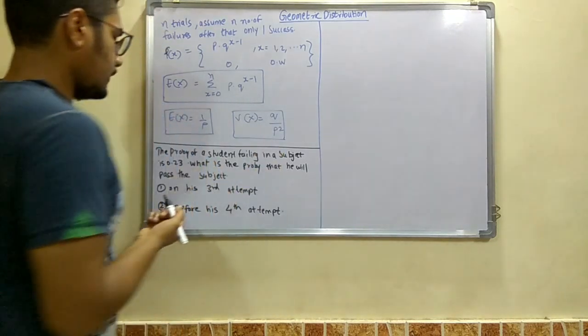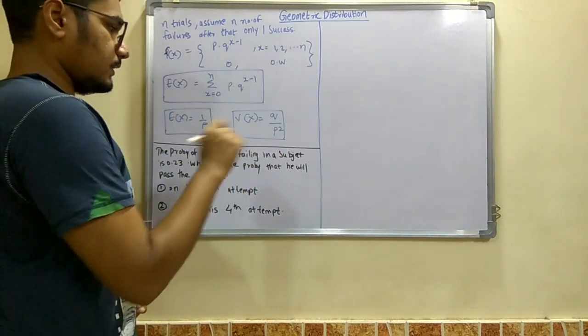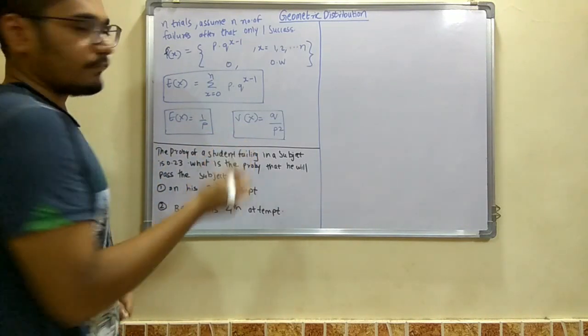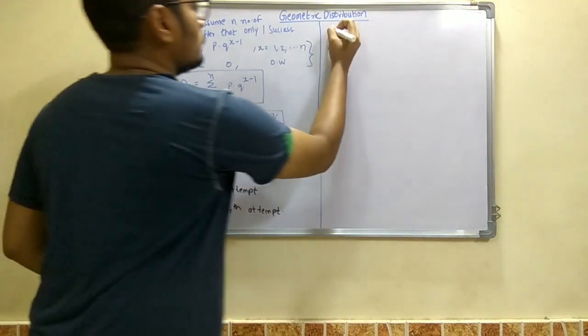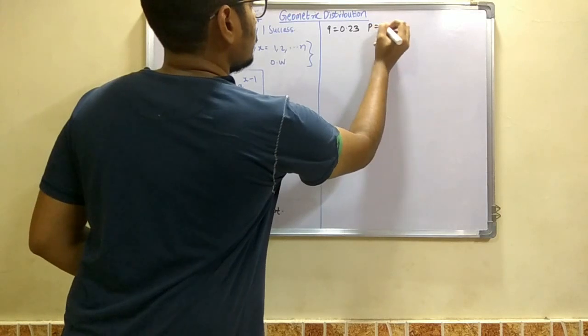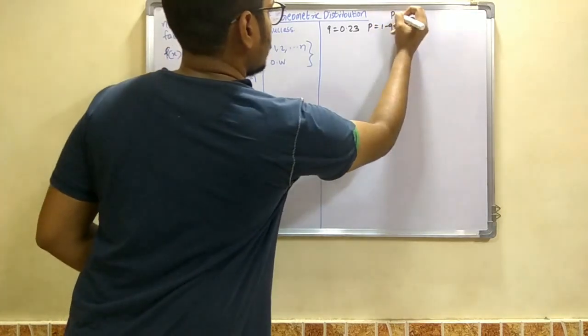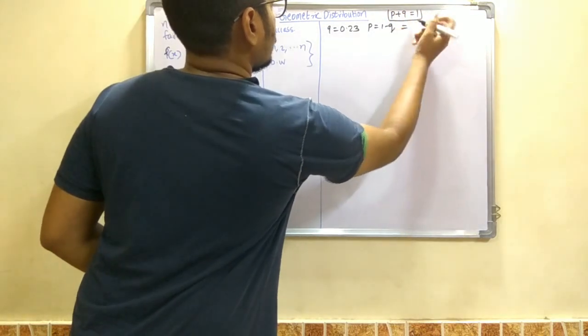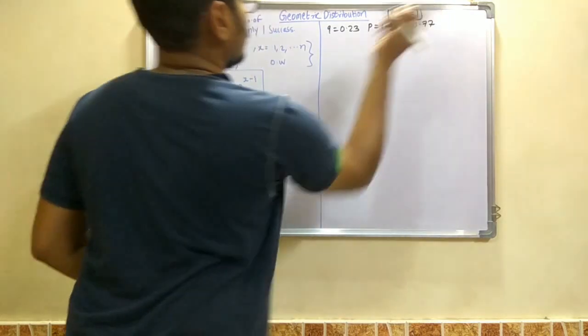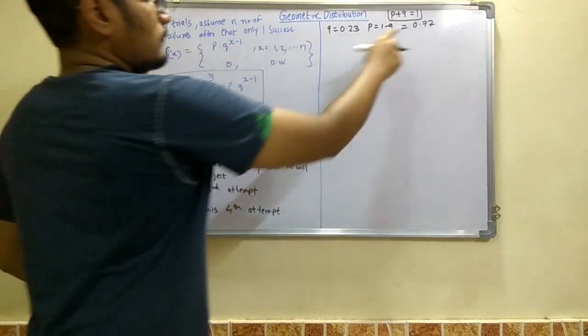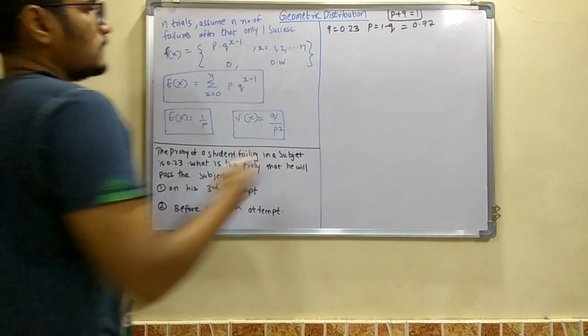So let's do it. First of all, we have from the question itself that probability of a student failing in a subject, means failure, is given as 0.23. That is q equals 0.23. And so p will be 1 minus q from the identity p plus q equals 1. And you have 0.77, that is 1 minus 0.23. And so we have p, q, and we have the x here.